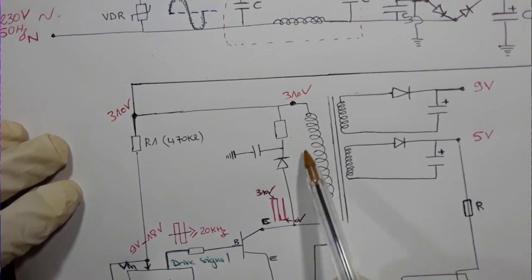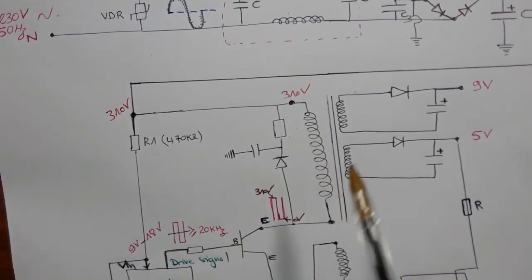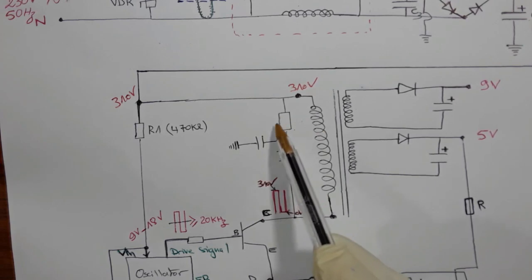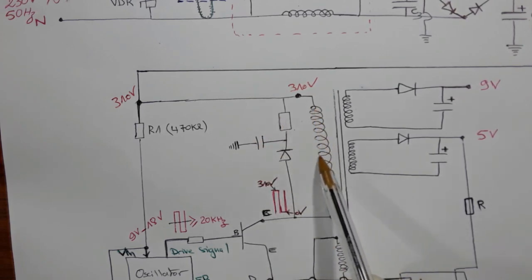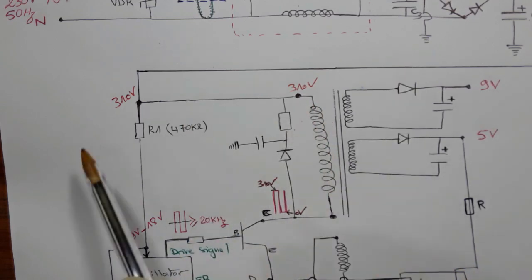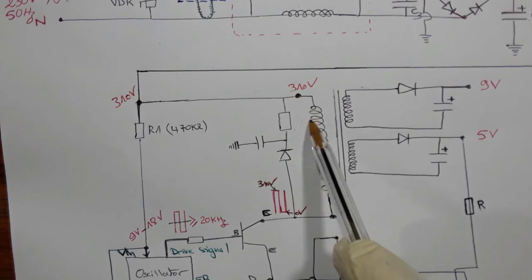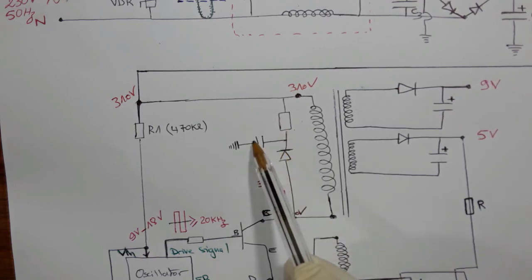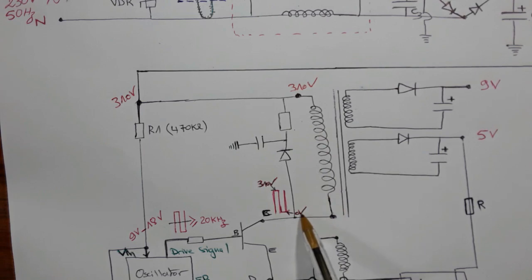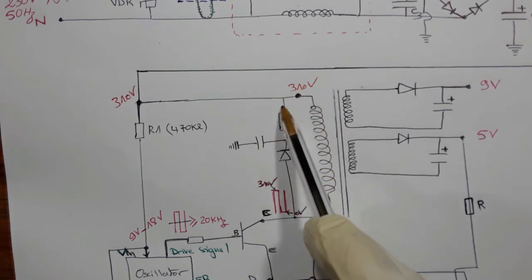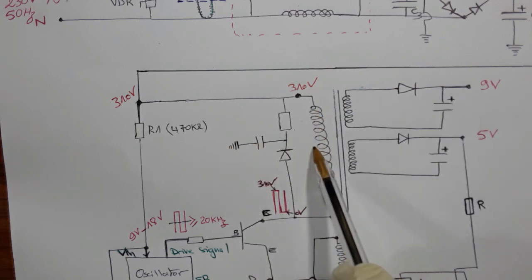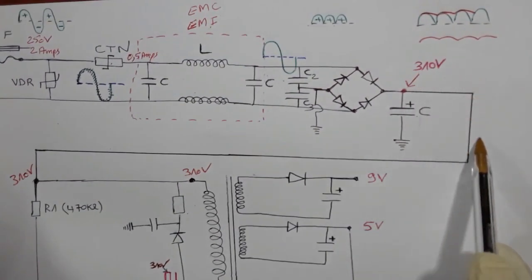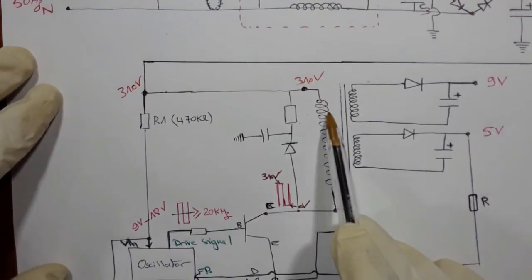This 310 volts passes through to the transformer. The transformer is connected to a resistor, a diode, and a capacitor. These three components are here to discharge the transformer: when power is removed, this coil will keep energy stored inside it, so the current passes through the diode, then the resistor, then the capacitor until the coil is fully discharged.